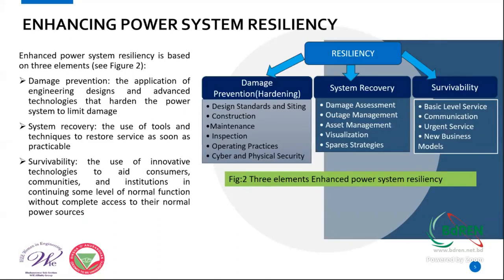When we talk about power system resiliency, three elements play a vital role: first is damage prevention — that is, robustness or hardening the system. Damage prevention is an application of engineering design. We need advanced technology to make our system robust so that damage is limited.